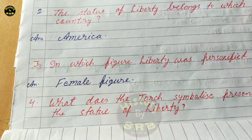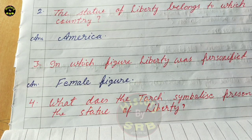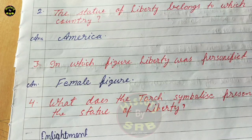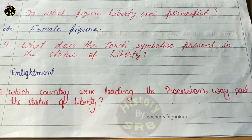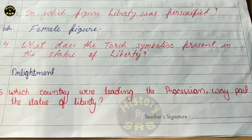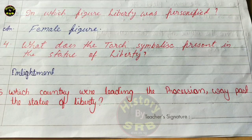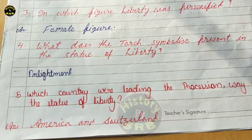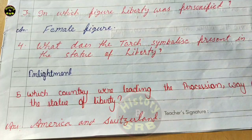Question number four: what does the torch symbolize in the Statue of Liberty? The correct answer is enlightenment. Question number five: which countries were leading the procession past the Statue of Liberty? The correct answer is America and Switzerland.